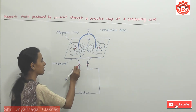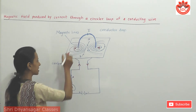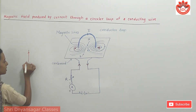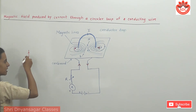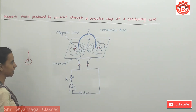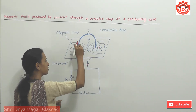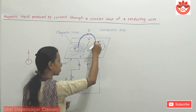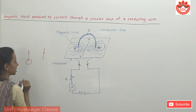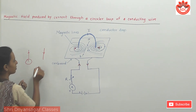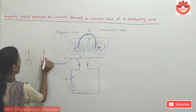When the current is in the upward direction, there is a magnetic field around the conductor. The direction of the magnetic field is also in the anti-clockwise direction. But when the current goes in the downward direction, at the Q point, the magnetic field is in the clockwise direction.